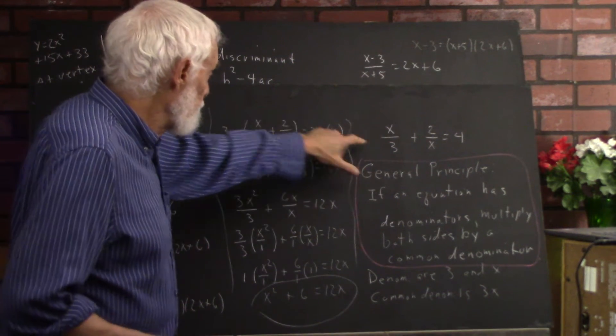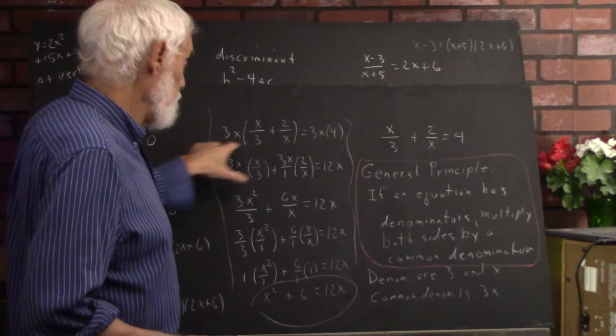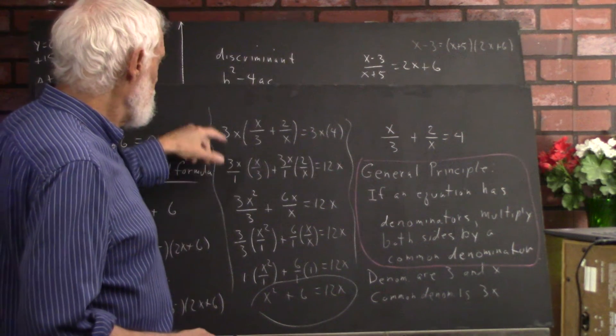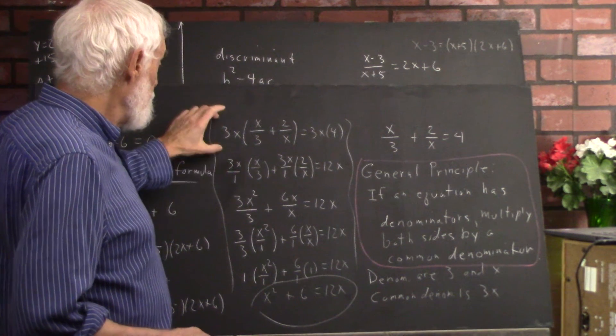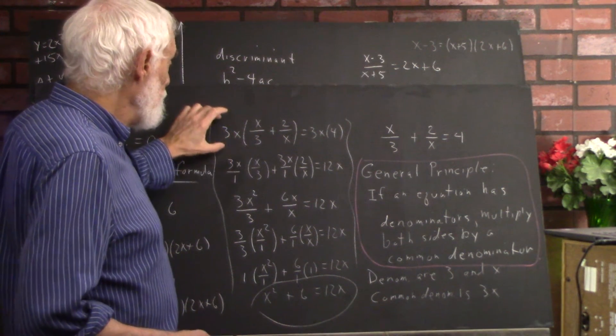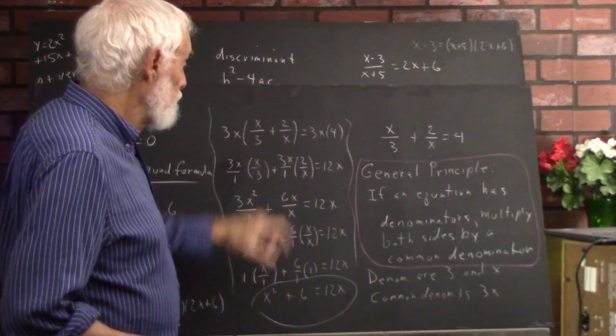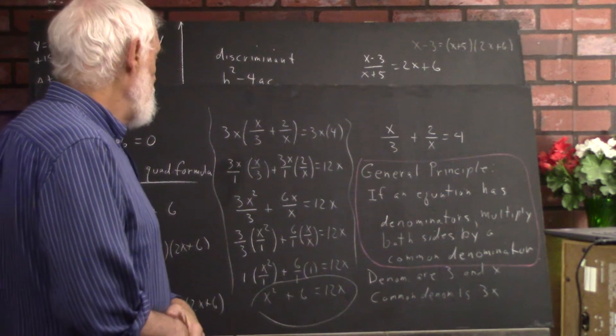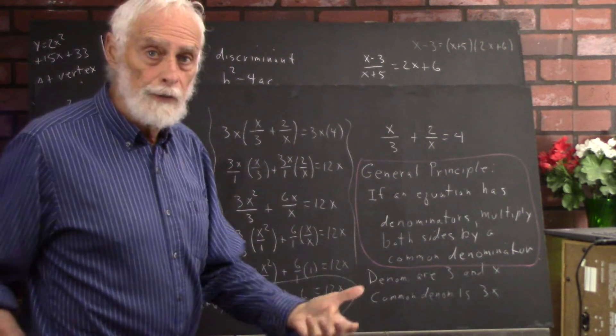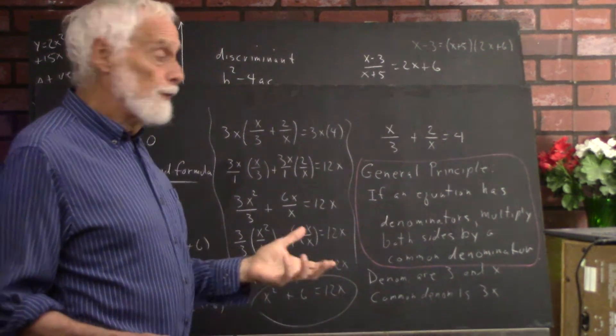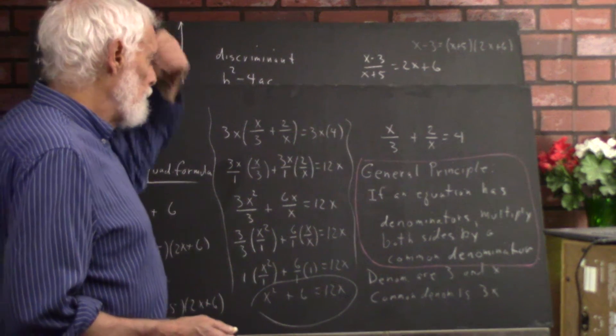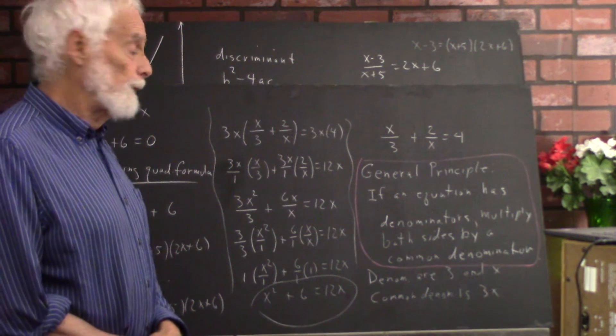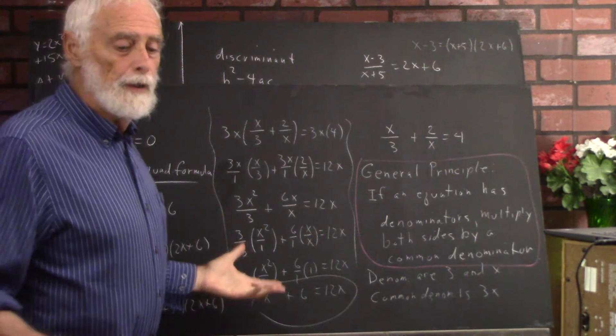So we multiply 3x by the left-hand side, we multiply 3x by the right-hand side. Very straightforward. And we then use the distributive law. Now, since we've got fractions, I'm going to write 3x as 3x over 1. And that's then multiplied by the x over 3 to get this term, and 3x over 1 times the 2 over x to get this. And of course, 3x times 4 comes out 12x. We'll go ahead and multiply that. Now, you're going to want to start crossing things out. That's cancellation.